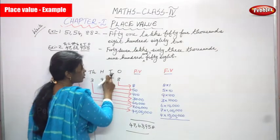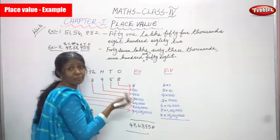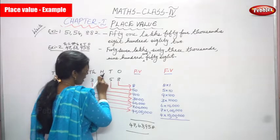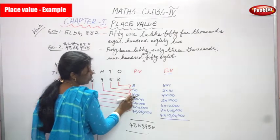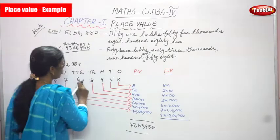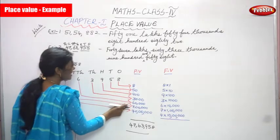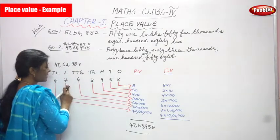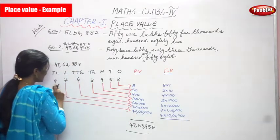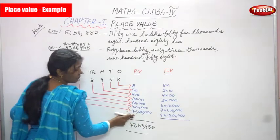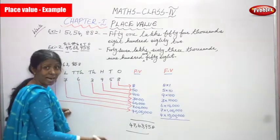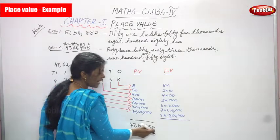Ones place: 8 — write as 8. Tens place: 5 — that is fifty. Hundreds place: 9 — that is 9 into 100, which is 900. Thousands place: 3 — that is 3,000. Ten-thousands place: 6 — that is 60,000. Lakhs place: 7 — that is 7 lakhs, so write 7 followed by five zeros. Ten-lakhs place: 4 — that is 40 lakhs. Adding everything gives 47 lakhs 63,958.